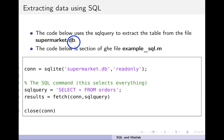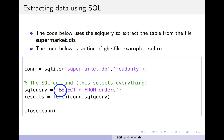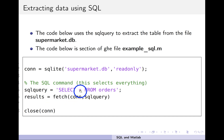The supermarket.db is a database file already created using a Python script. In the example file example_sql.m, available on the DLE, you connect to the file using the SQLite command — this requires MATLAB with the database toolkit installed. The SQL query 'SELECT * FROM orders' extracts everything from the orders table. You run this with the fetch command, the output goes into results, and then you close the connection.